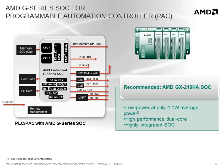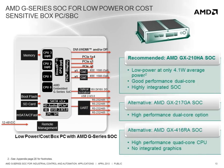For programmable automation controllers that require good performance and very low-power operation, the recommended SOC is the GX210HA, with its average power of only 4.1 watts, delivering high-performance dual-core x86 processing in a highly integrated SOC. For low-power or cost-sensitive box PC applications that require low to moderate performance with a complement of I/O that can fit into small form factor designs, again the GX210HA is the recommended solution, offering a very low-power and highly integrated solution with good performance, and footprint-compatible scalability to the higher-performance dual-core GX210GA.